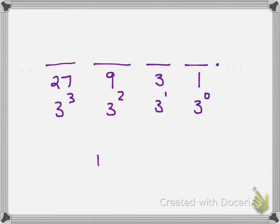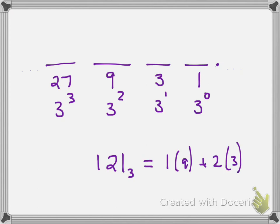So for example, if I had the number 121 in base 3, that's the same as having 1 nine, plus 2 threes, plus 1 one. So that's 9 plus 6 plus 1, which is 16. That's what each of those places represents.